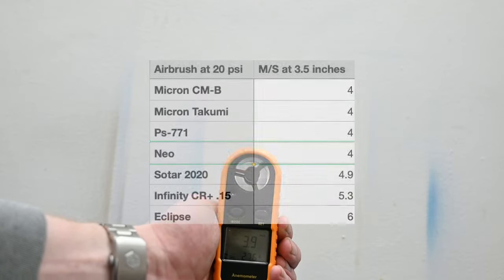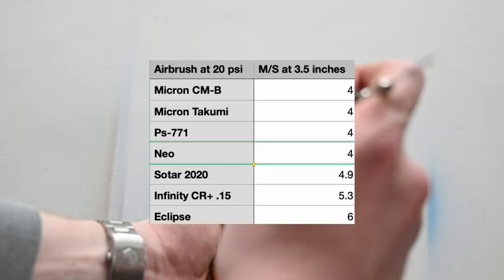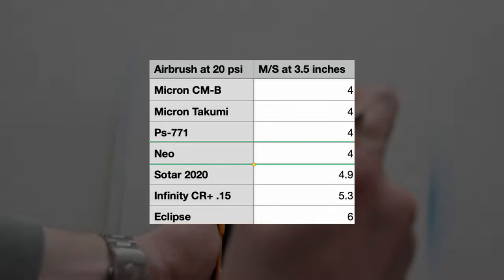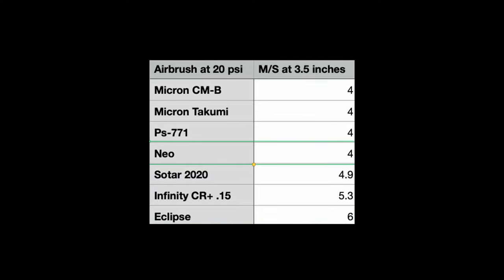One of my favorite features of the Neo is the airspeed. Spraying at 20 psi at 3.5 inches away, I get an airspeed of 4 meters per second. Now this airbrush isn't marketed or sold as a detail airbrush. With a number like 4 meters per second, we can see that it's in line with the Micron and the PS771.